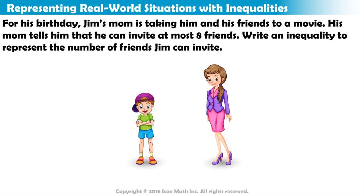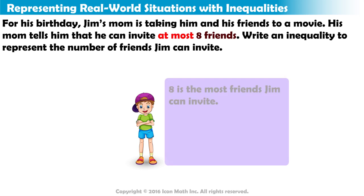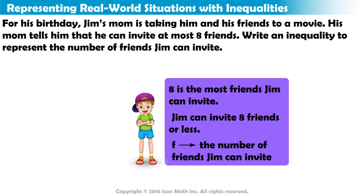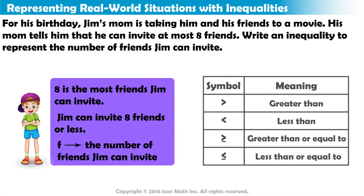The word 'at most' lets us know that eight is the most friends he can invite. Jim can invite eight friends or less. To represent this as an inequality, where F is the number of friends Jim can invite, we must first determine the inequality sign to use.